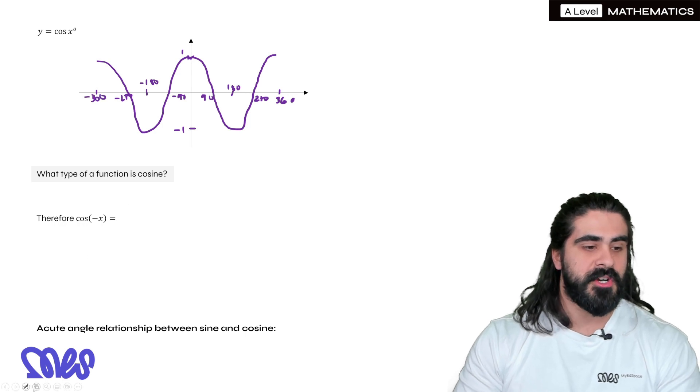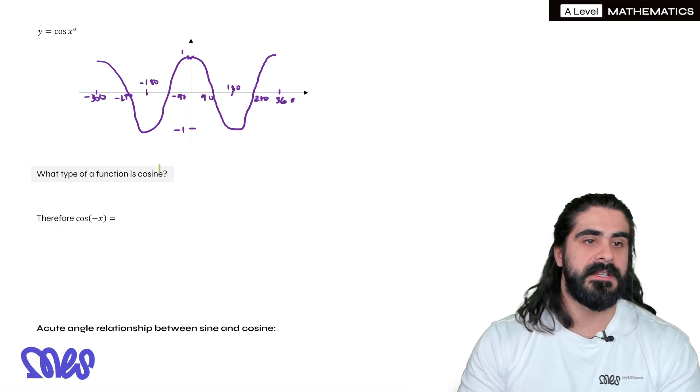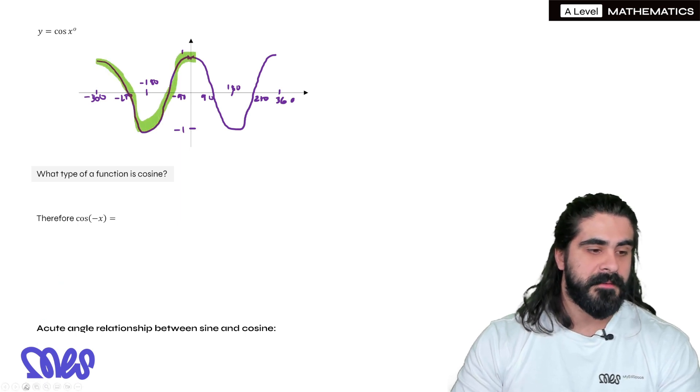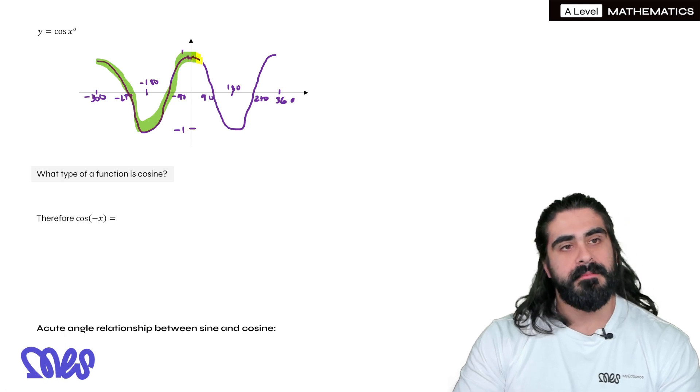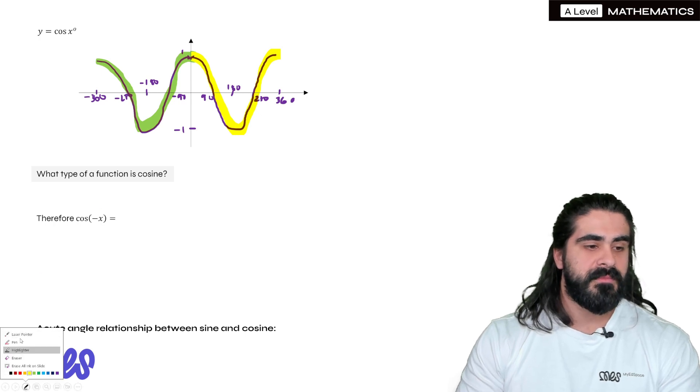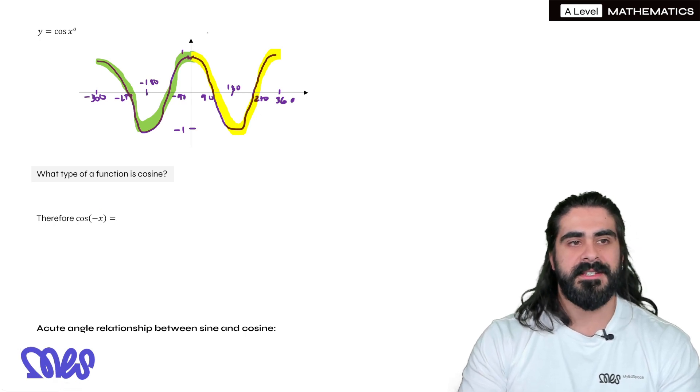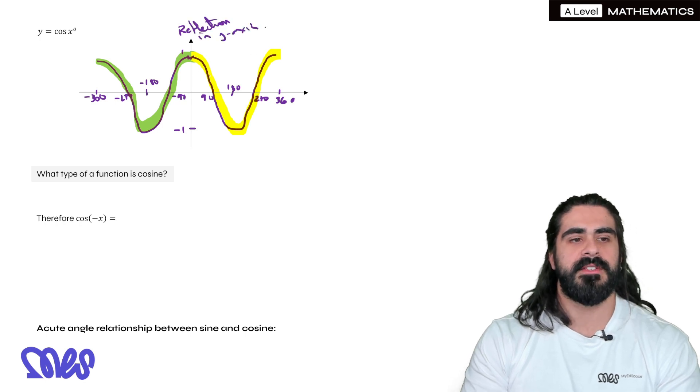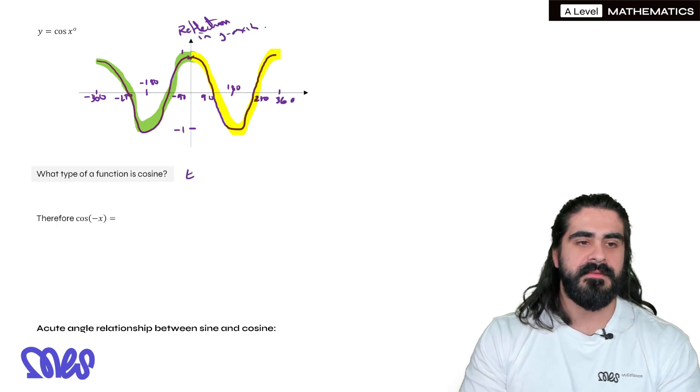What type of function is cosine? You might be able to guess, based on me saying that the sine graph is an odd function, but why is it what you're thinking? If we look at the positive side of the cosine, what transformation takes you to the green side? Well, here, it should be easier to tell that it's just a reflection in the y-axis. This is known as an even function.